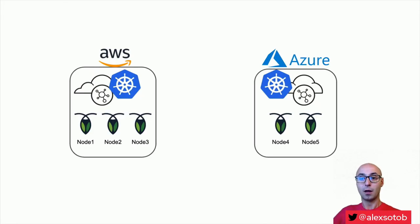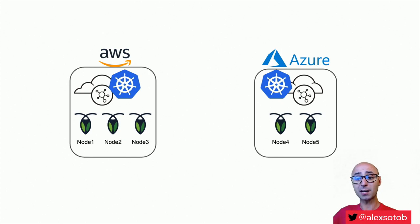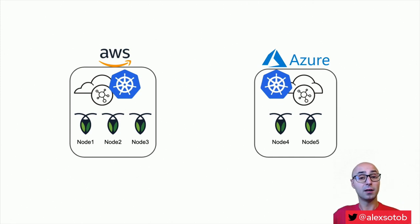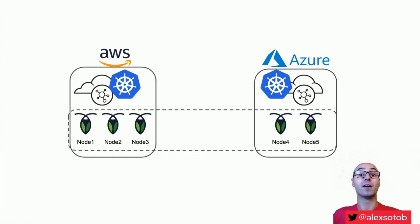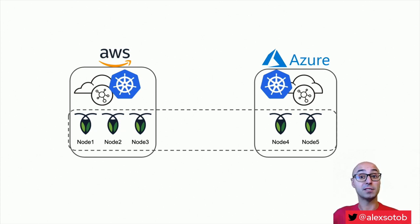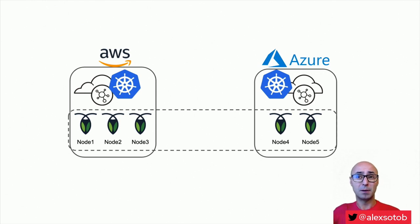So let's start! What we want to do is exactly what you are seeing on screen. I've got a Kubernetes cluster deployed in Amazon and another cluster deployed in Azure. What I want to do is deploy a CockroachDB cluster — one in Amazon and another in Azure — but have them behave as one. So node 1, node 2, and node 3 are part of a bigger CockroachDB cluster together with node 4 and node 5, even though they are in different cloud providers.